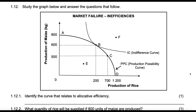Study the graph below and answer the questions that follow. It says here market failure inefficiencies. We have an indifference curve here, which has the same level of utility. Any consumption bundle here will yield the same level of utility. So allocatively, producing along this curve, you will be efficient.